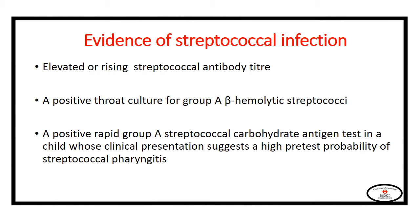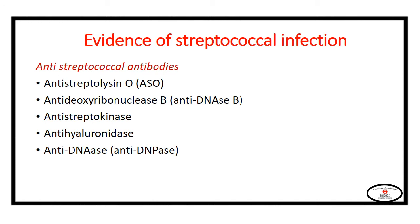Evidence of streptococcal infection includes: elevated or rising streptococcal antibody titers, with a sensitivity of about 80% in diagnosing acute rheumatic fever; a positive throat culture for group A beta-hemolytic streptococcus, with sensitivity of only 40%; or a positive rapid group A streptococcal antibody test in children whose clinical presentation suggests high probability of streptococcal pharyngitis. Many anti-streptococcal antibodies can be used, the most common being anti-streptolysin O titer. Combining anti-streptolysin O titer with any other test increases diagnostic sensitivity to 90%.